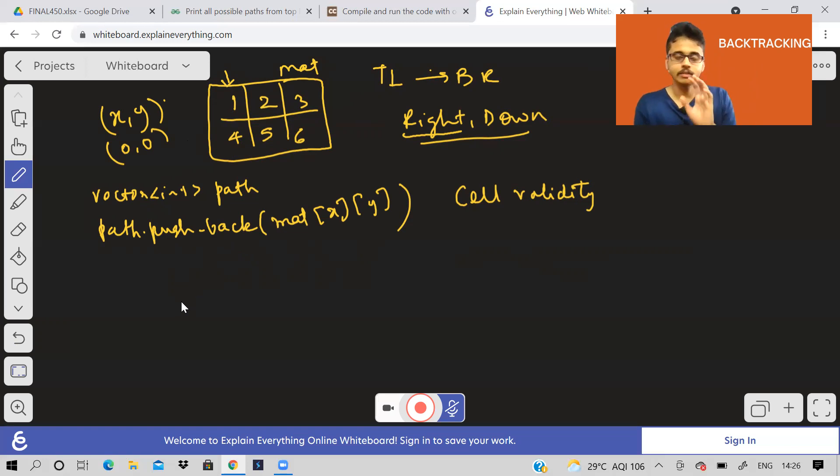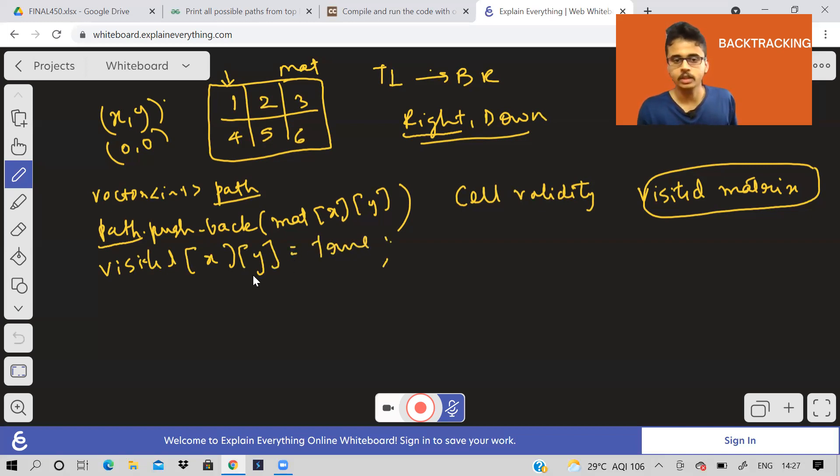And one more important thing in this DFS kind of problems is we need to keep a visited array, visited matrix or visited array, whatever you can say. Why do we need visited matrix? Because we don't want to end up in the same place. We don't want to make it a cycle. And if we have already traversed that point, we don't want to continue again and again. So that's why you need a visited matrix.